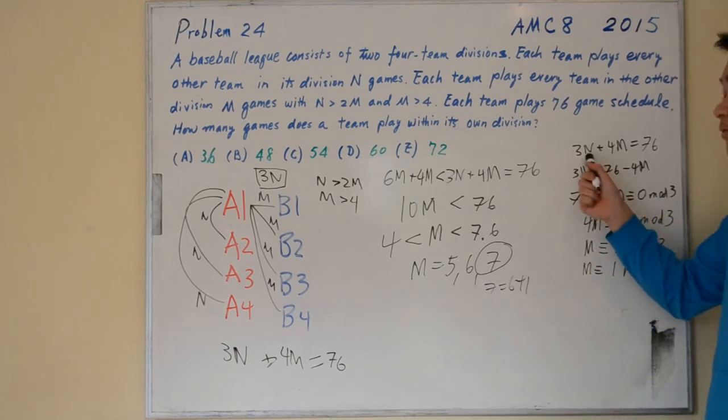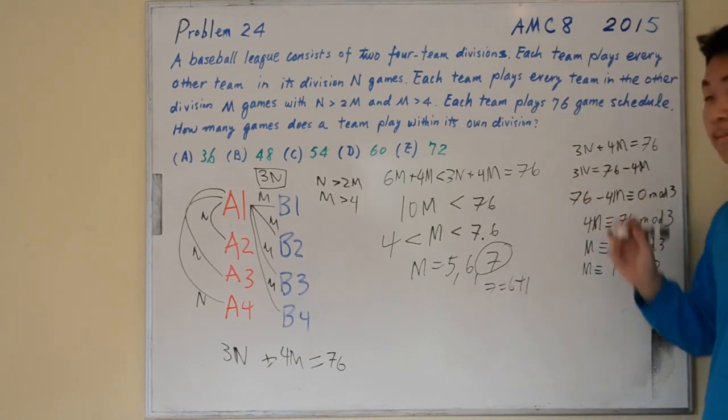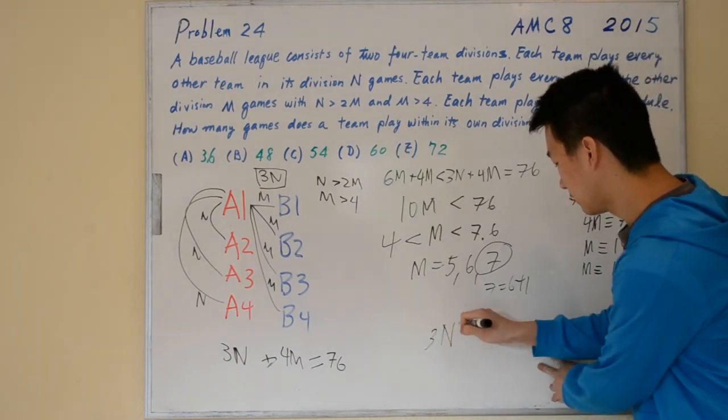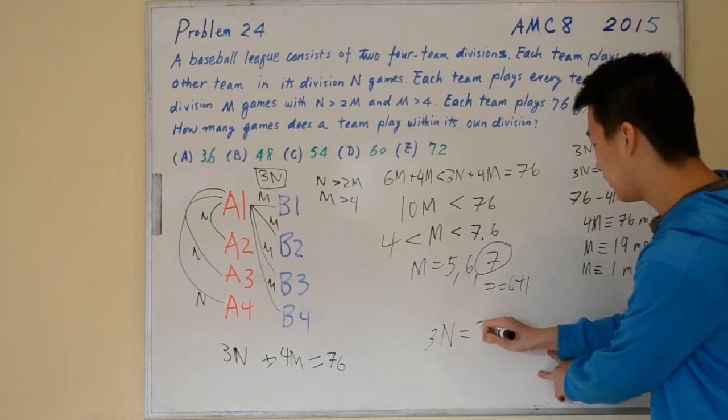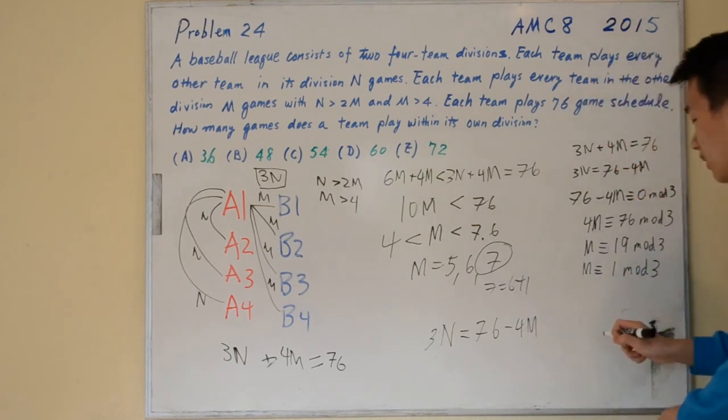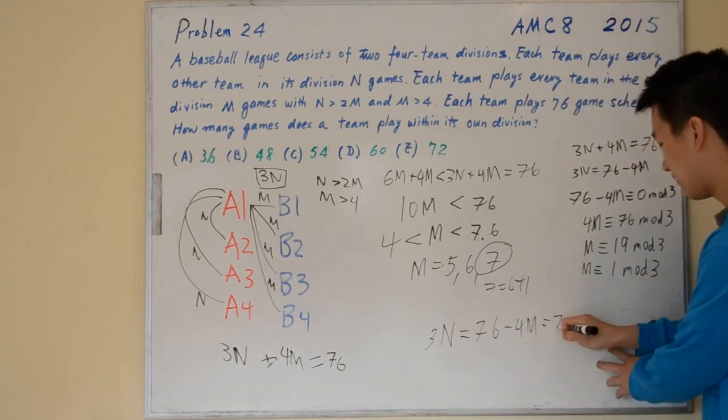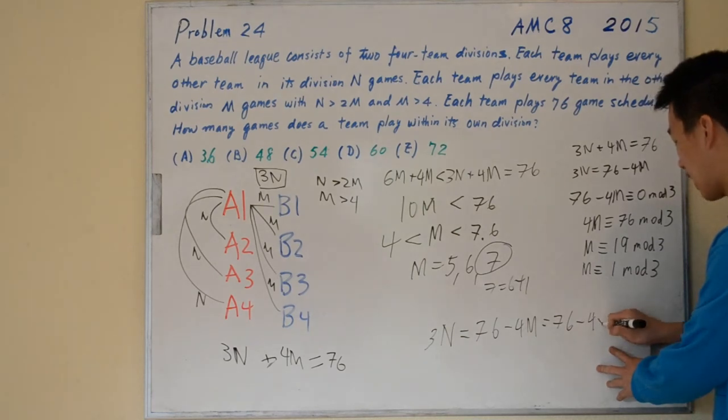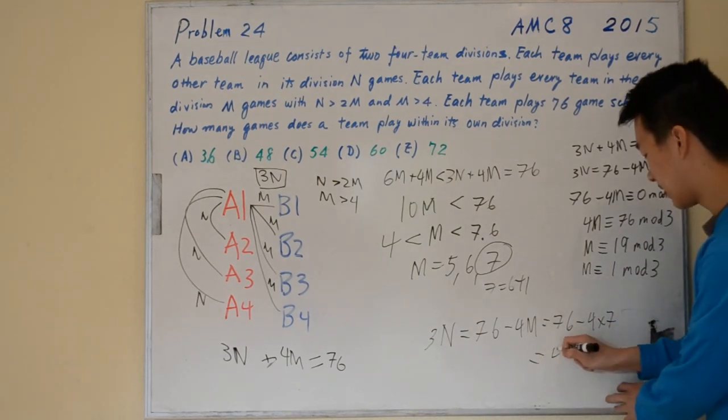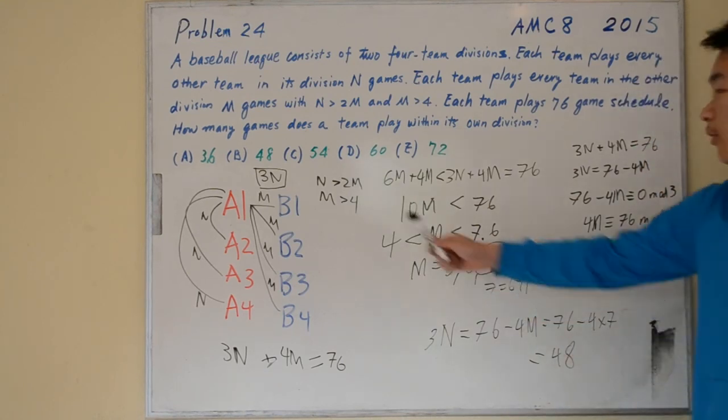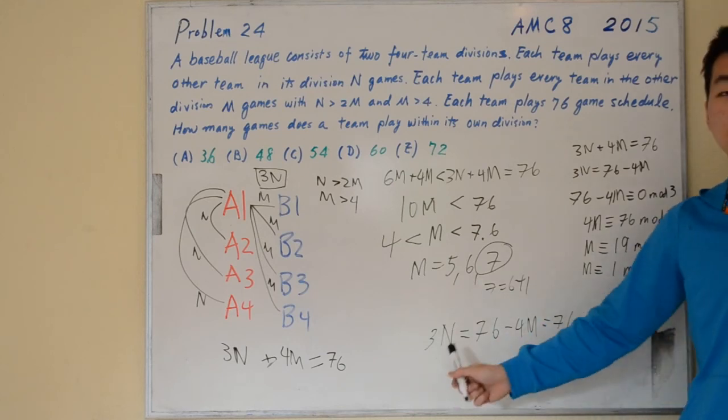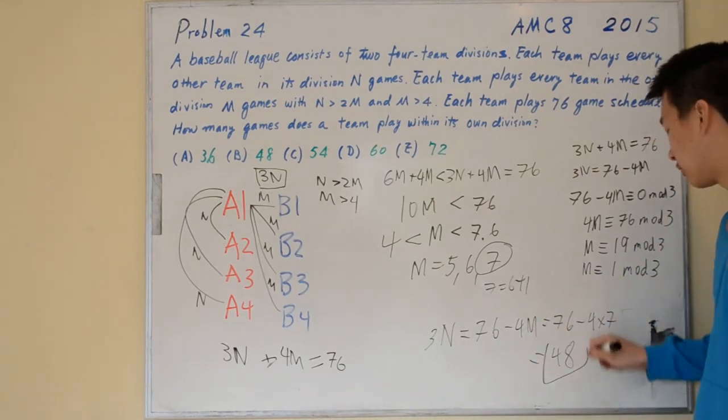Now we can solve for 3N by plugging M back in. So 3N equals 76 minus 4M, which equals 76 minus 4 times 7, which equals 48. We are looking for 3N, so we do not need to solve for N itself by dividing by 3. So our final answer is 48.